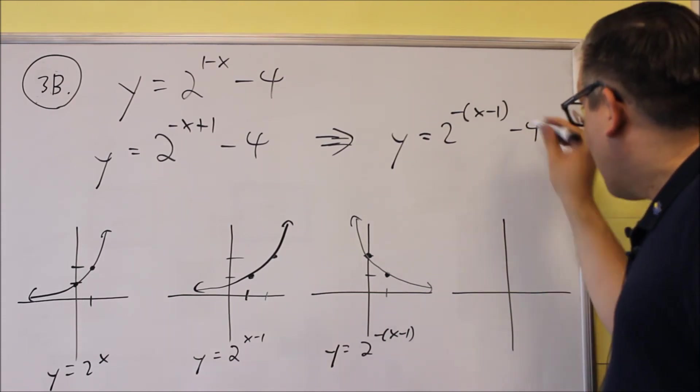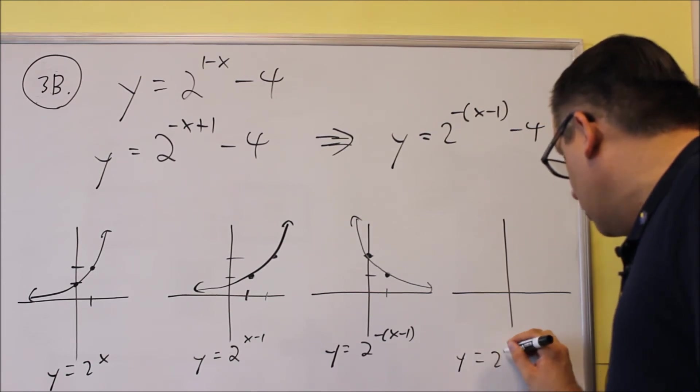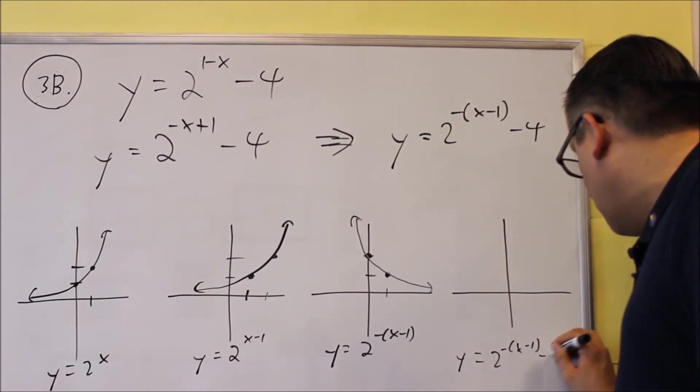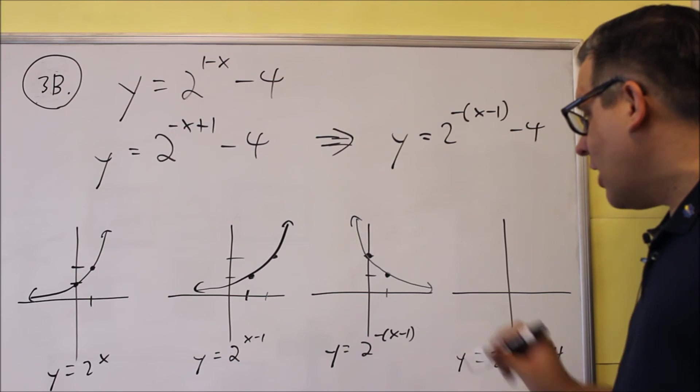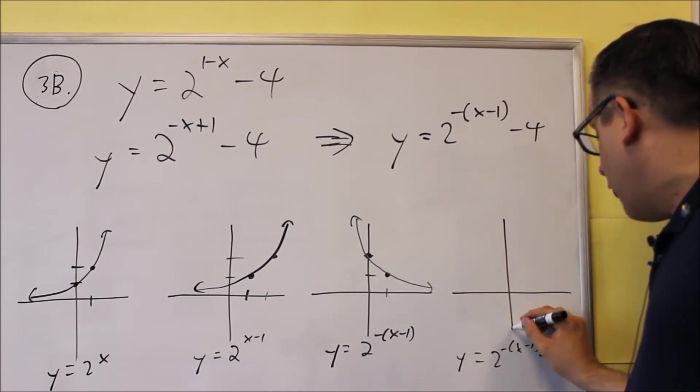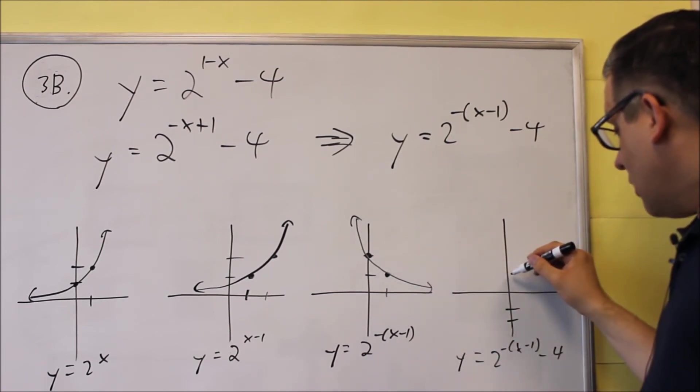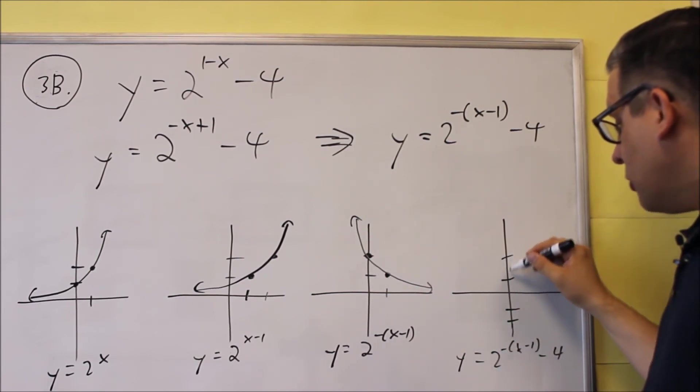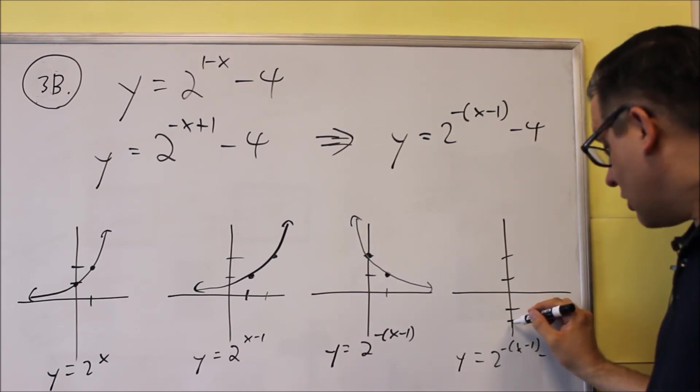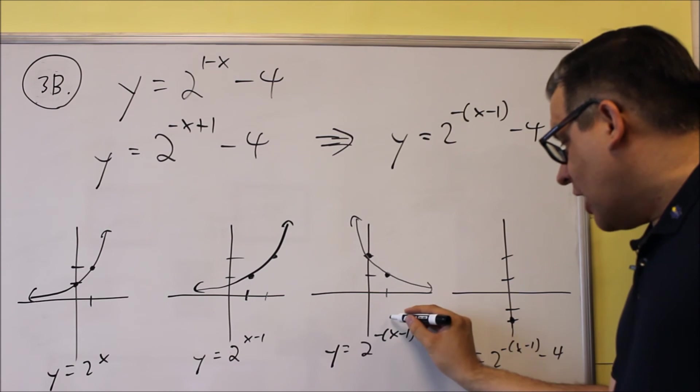And then I have a minus 4. So I've got to do 2 to the negative x minus 1 and then minus 4. So now these two points here are going to be shifted down 4 units. And so this right here, it was at positive 2. I'm going to move it down 4 down to here. The 1 that's there, that gets shifted down 4 also.